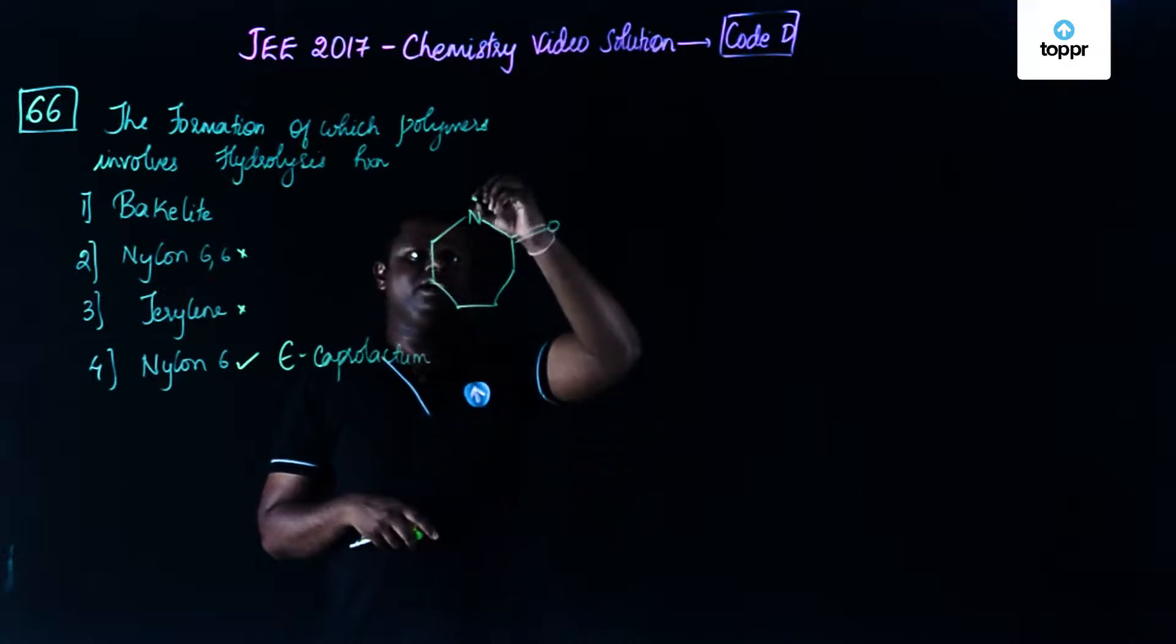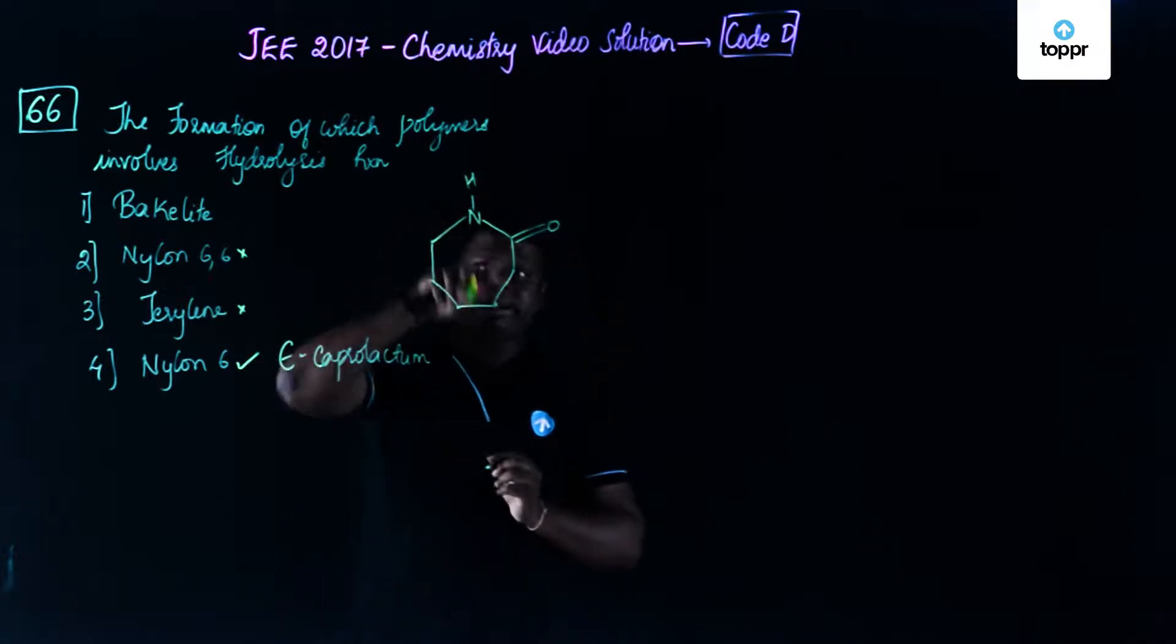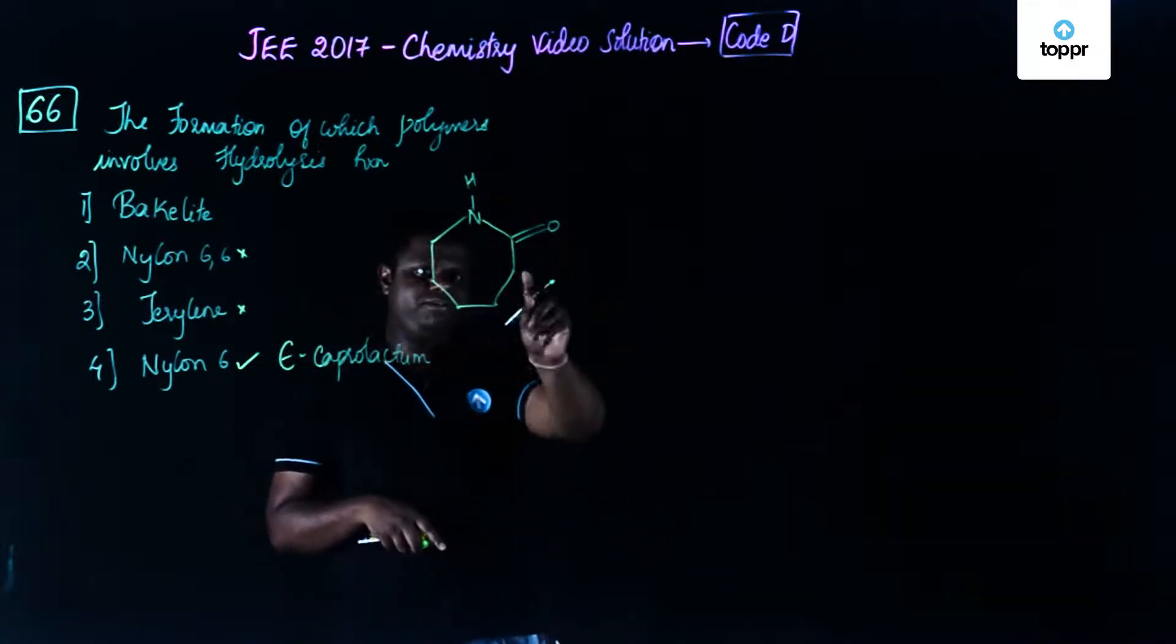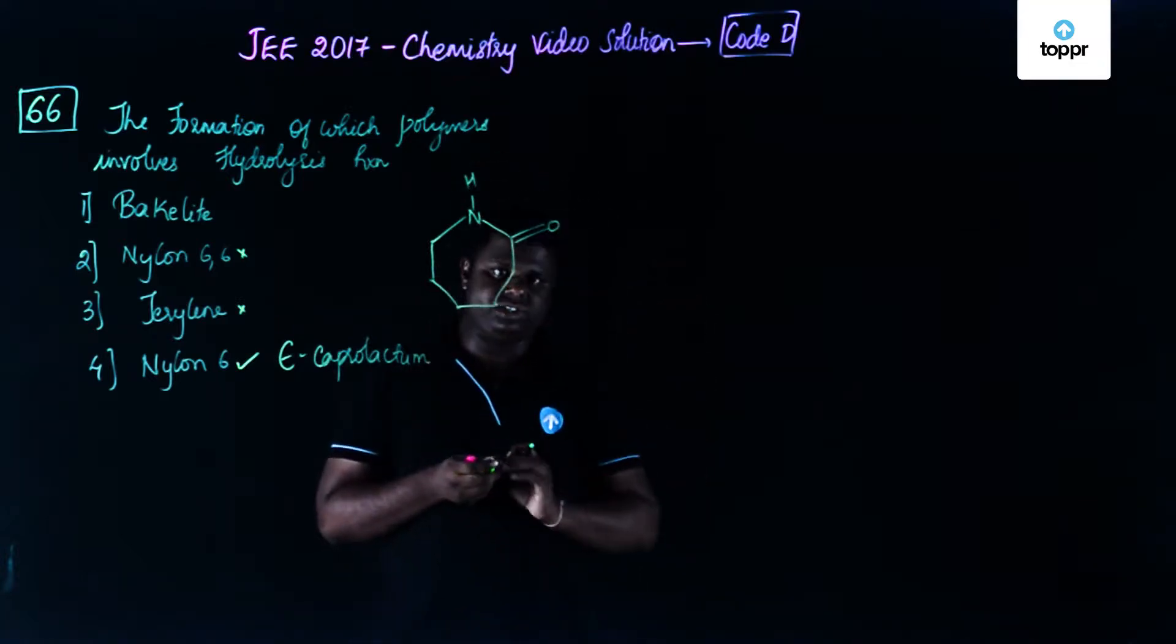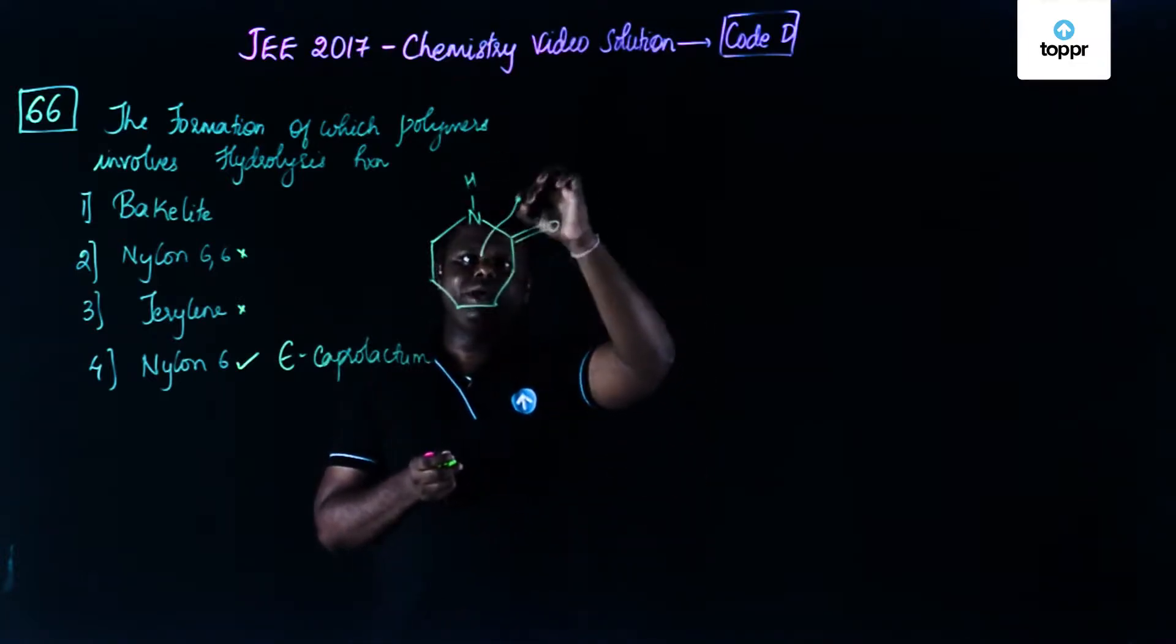So what exactly happens over here? This is epsilon caprolactam. So alpha, beta, gamma and also that way you have epsilon caprolactam, lactam in cyclic ester. So the bond breaks this way.